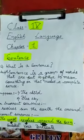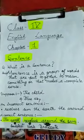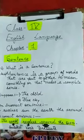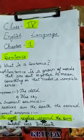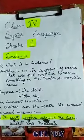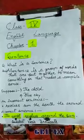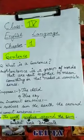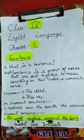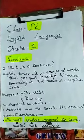Now I am giving you some jumbled words: revolves, sun, the, earth, the, round. Now if I want to put them in a correct sentence, how shall I write? The earth revolves around the sun.